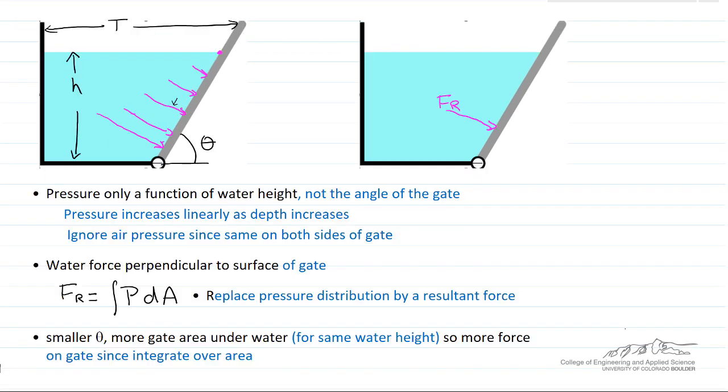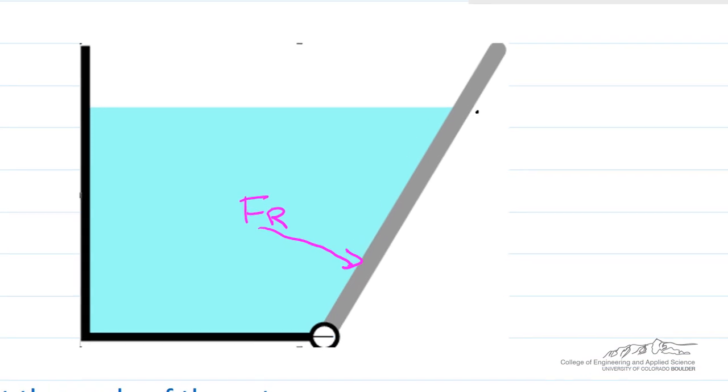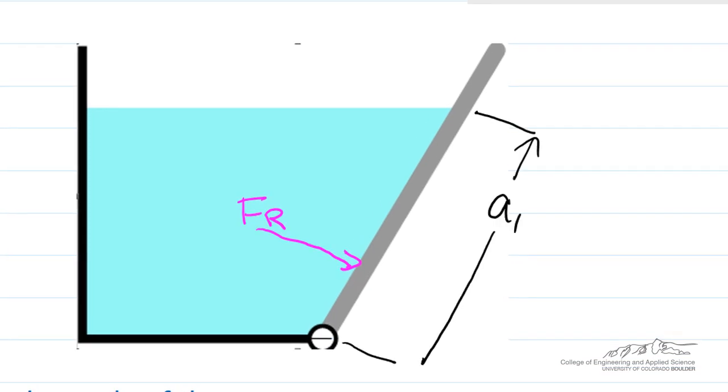The next thing we want to do is determine the location of this force so it has the same moment as the distributed forces. If the length of the gate that's underwater is A1, we'll end up showing that this distance is one-third of A1. That is, the force acts at one-third of the height from the bottom.